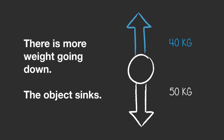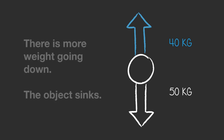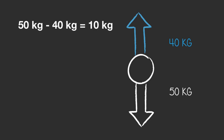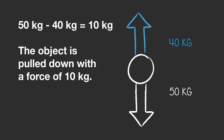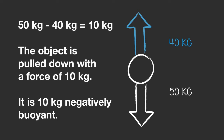By how much does it sink? We find this by working out the difference between the weight of the object and the weight of the water it displaces. 50 kg minus 40 kg equals 10 kg. The object is being pulled down with a force of 10 kg — it is 10 kg negatively buoyant.